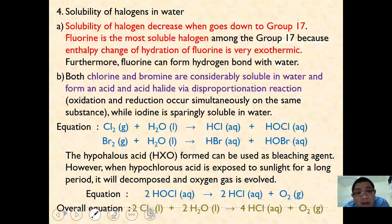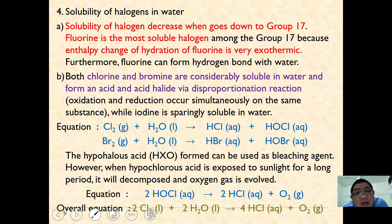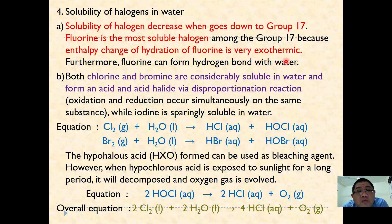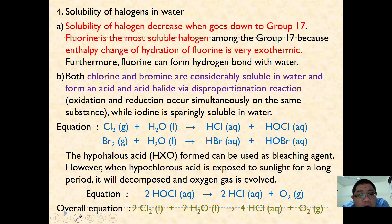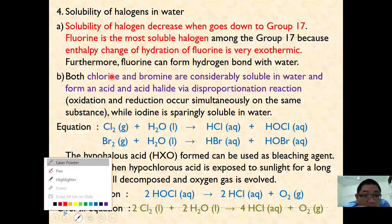Halogens are slightly soluble in water. Fluorine is the most soluble because its enthalpy of hydration is very exothermic and it can also form hydrogen bonds with water. Both chlorine and bromine are considerably soluble in water, forming an acid and an acid halide via a disproportionation reaction, while iodine is only sparingly soluble. The chemical equation shows the disproportionation of chlorine: the oxidation state of chlorine changes from 0 to −1 in HCl and +1 in HOCl.